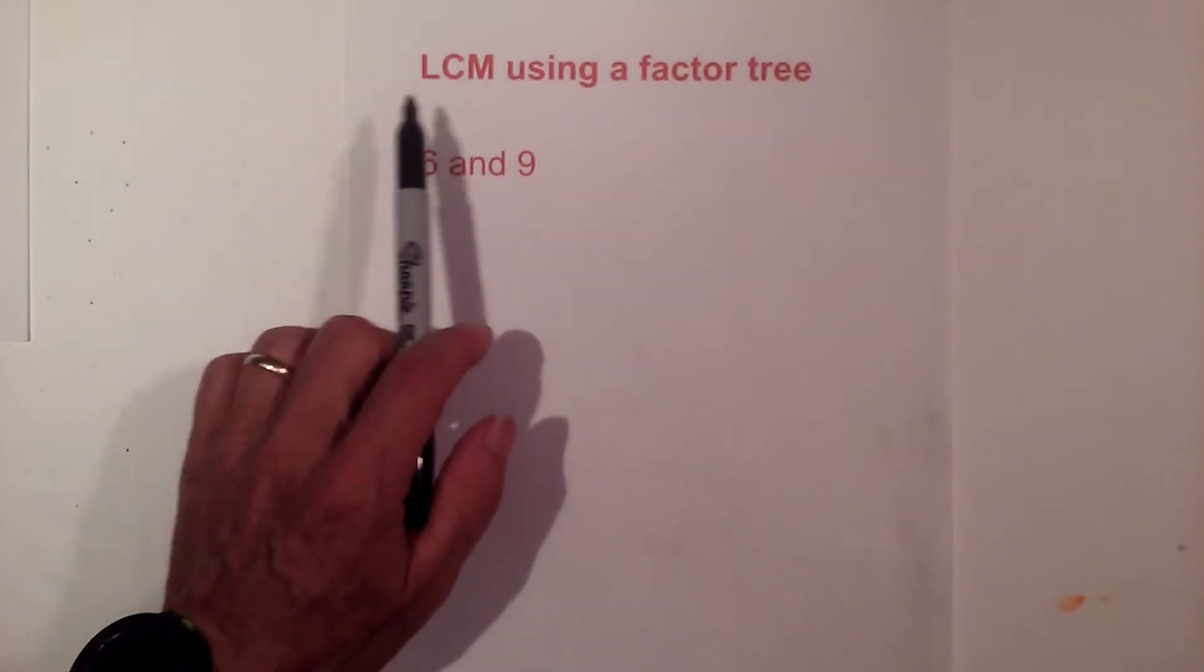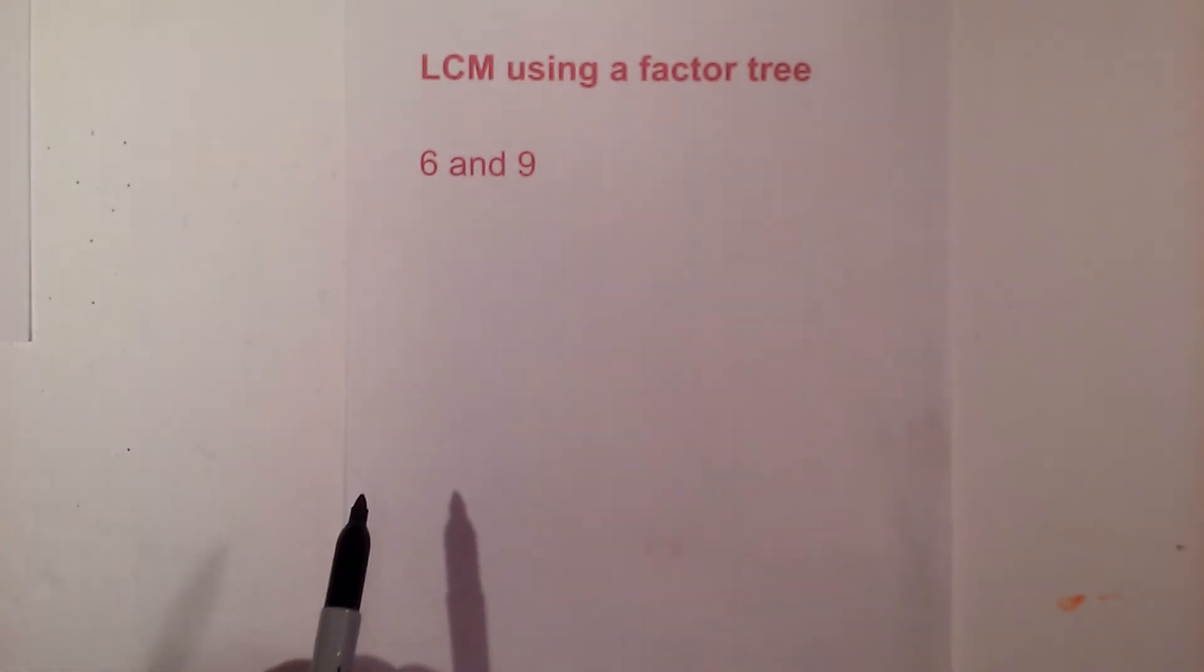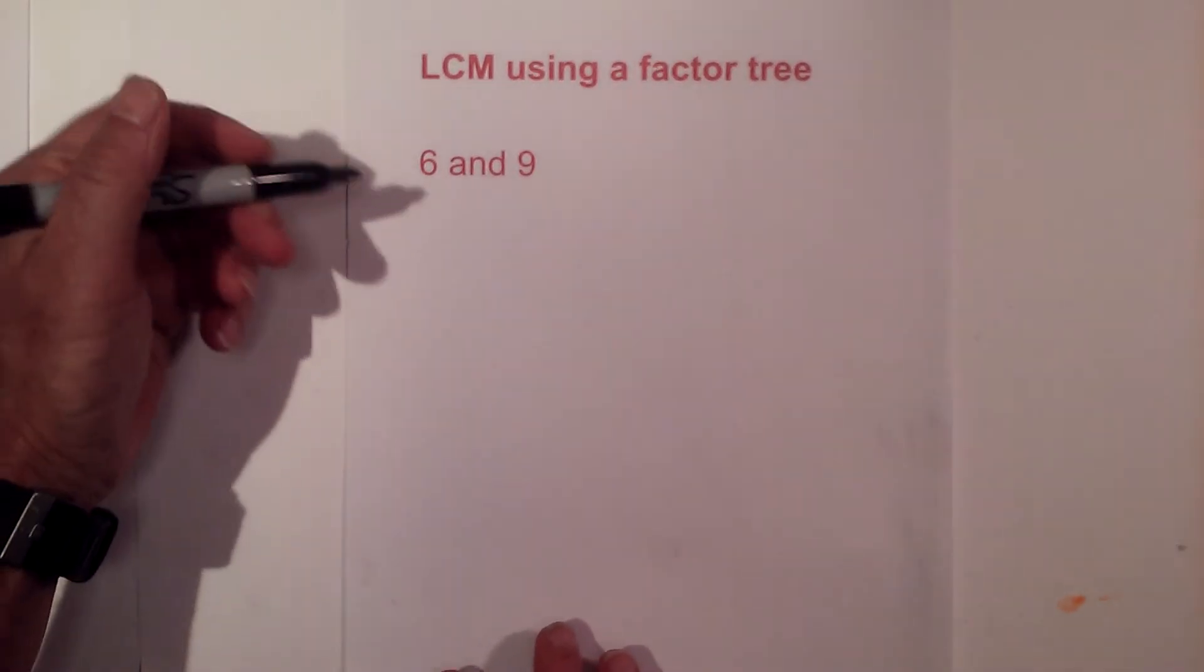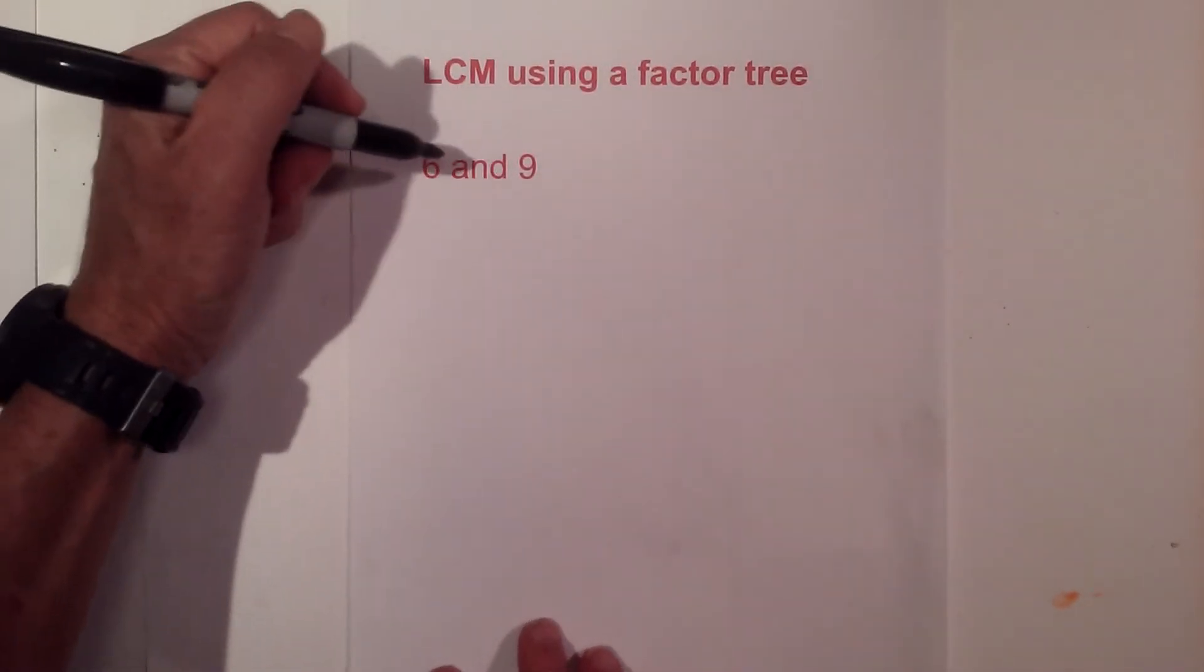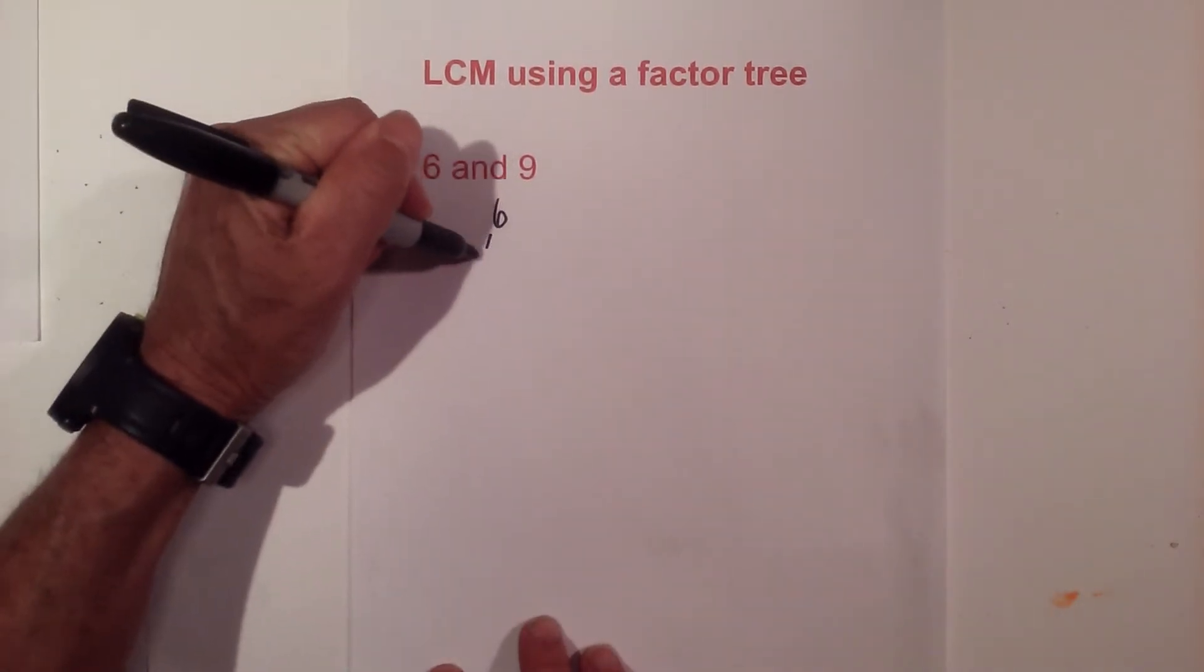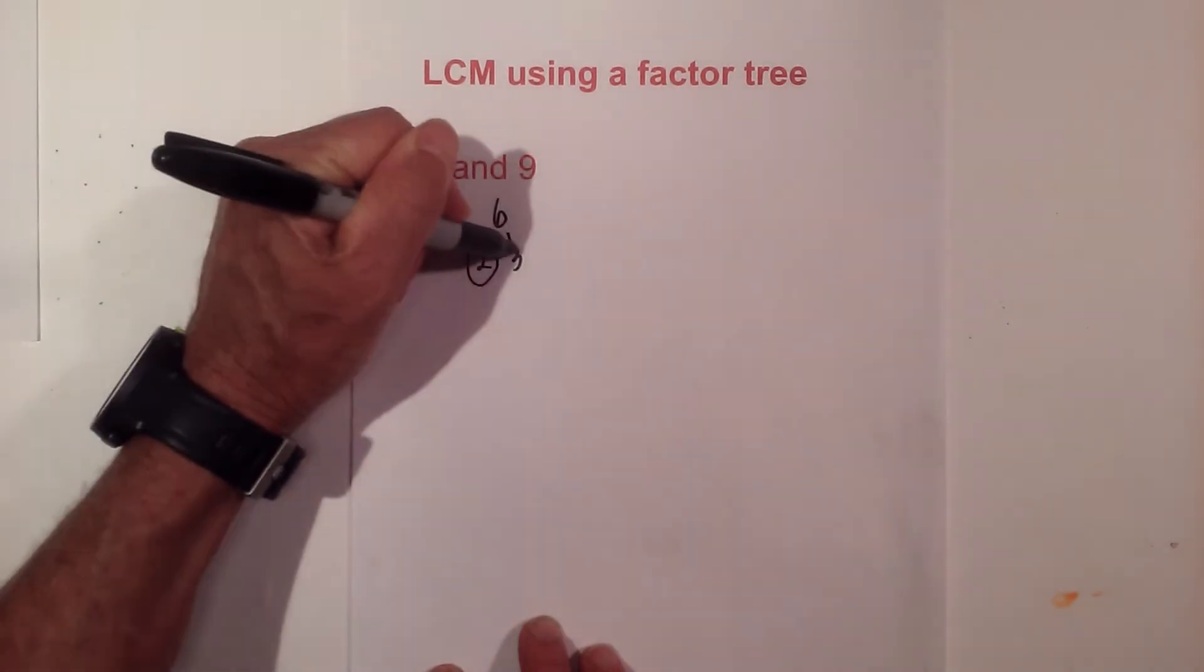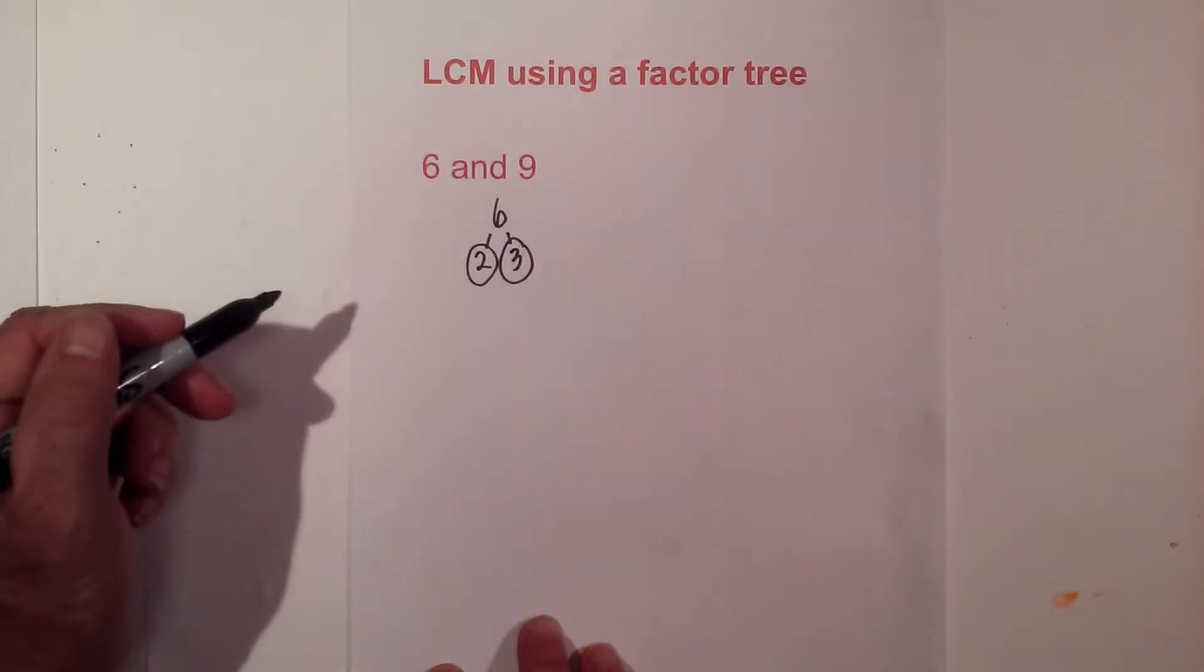In this video let's find the LCM or the least common multiple of 6 and 9. I like to use a factor tree so I'm going to first find all the prime numbers of 6. 2 goes into 6, 2 times 3. I'll circle the 2 and the 3 because they are both prime.